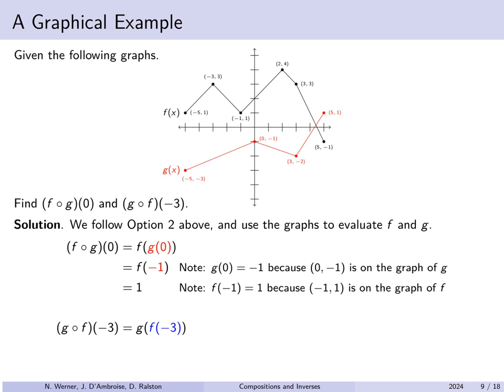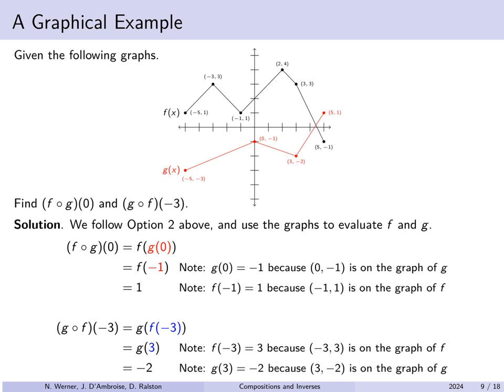Now g(f(minus 3)): first find f(minus 3). Looking at the graph of f, when x is minus 3, y is 3, so f(minus 3) equals 3. Now compute g(3): from the graph, g(3) equals minus 2. So overall, g(f(minus 3)) equals minus 2.